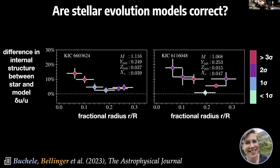One of my PhD students, Lynn Buchele, has been applying this to more stars observed by Kepler and finding greater differences in the core regions of stars that are a bit more massive than our sun. The previous star I showed is very solar-like, and our theory has been pretty well calibrated to the sun. But as you move to more different stars, bigger differences start to emerge. This might tell us how we can ultimately improve our stellar evolution models.